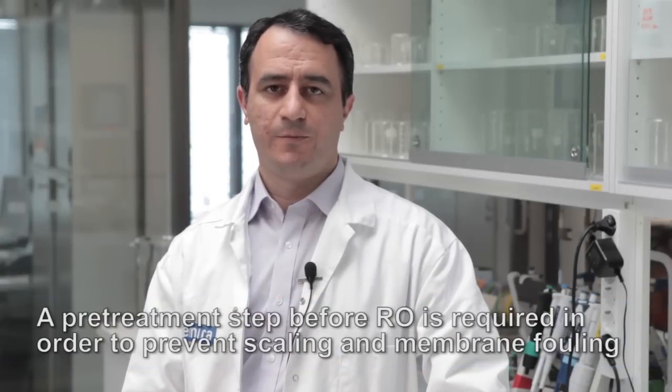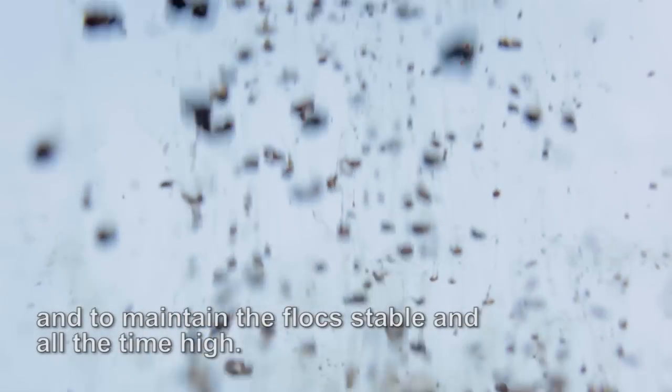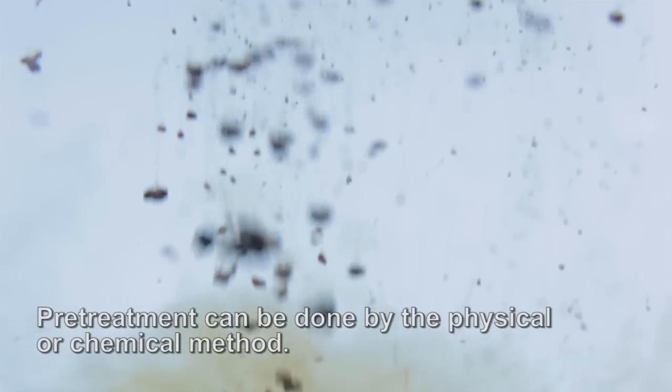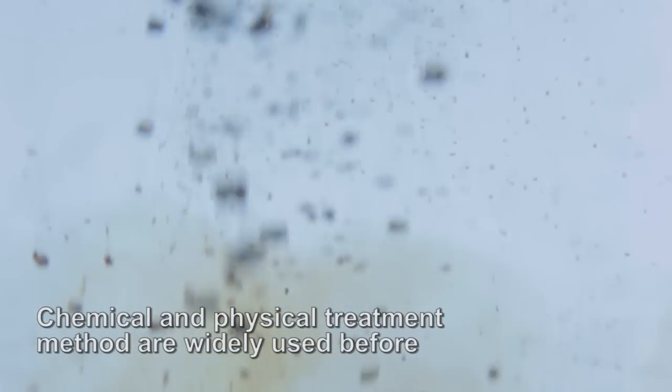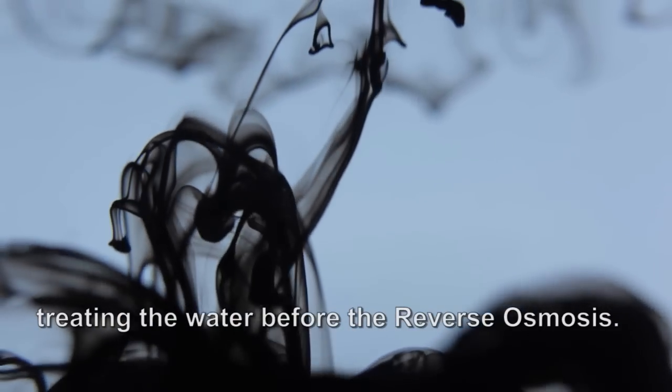Pre-treatment steps before RO are required to prevent scaling and membrane fouling and maintain the flux stable and high. Pre-treatment can be done by physical or chemical methods. Chemical and physical treatment methods are widely used for pre-treatment in water before reverse osmosis.